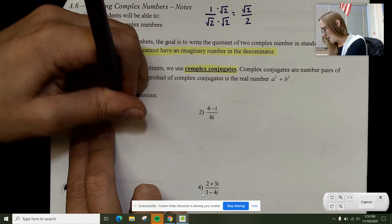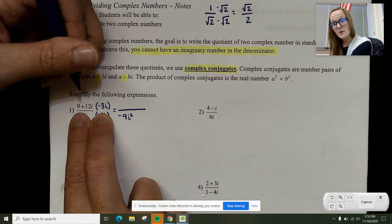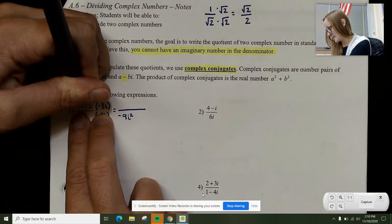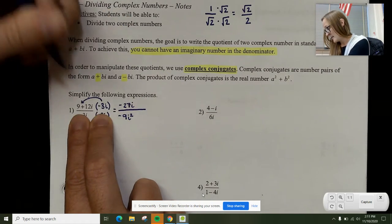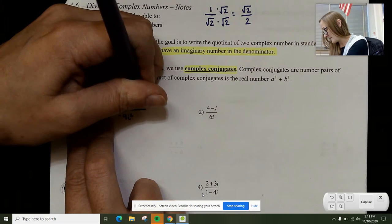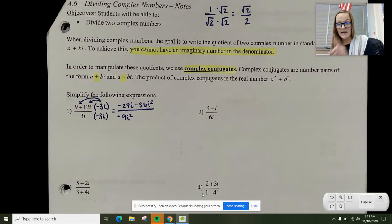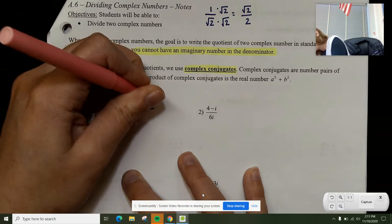In the top, I have negative 3i times 9 plus 12i. I'm going to distribute that in. Negative 3i times 9 gives me negative 27i. Negative 3i times 12i gives me negative 36i squared. Notice here, I have two i squareds: one is here, and one is here.